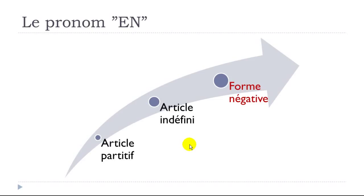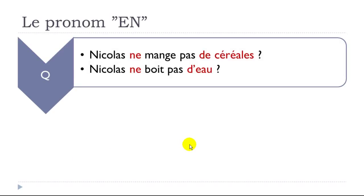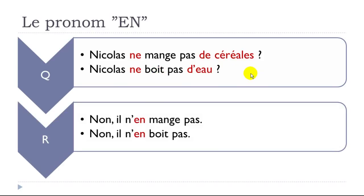Negative form: 'Nicolas ne mange pas de céréales' — 'Non, il n'en mange pas.' 'Nicolas ne boit pas d'eau' — 'Non, il n'en boit pas.' The pronoun 'en' stays before the verb. The 'ne' comes before 'en,' but since 'en' starts with a vowel, the 'e' of 'ne' disappears: 'n'en.' Then 'pas' comes after the verb.